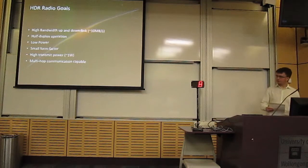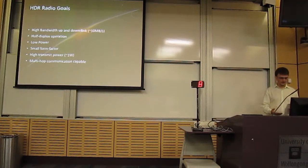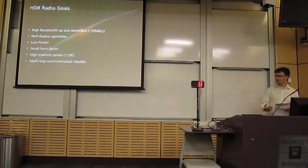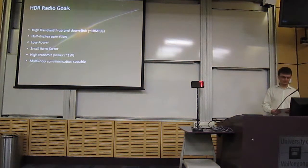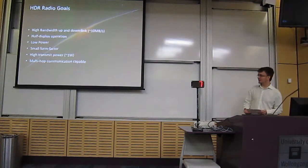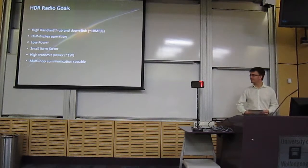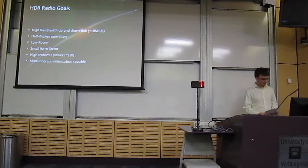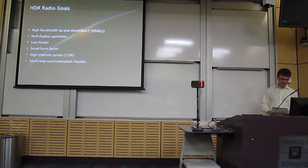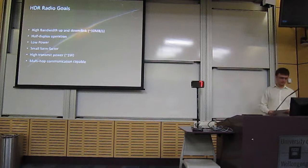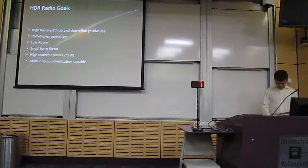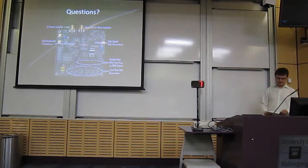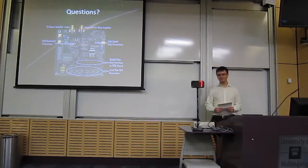The goals for the radio were high bandwidth down and uplink, not just the high bandwidth downlink that most satellites have now. It's also going to operate half duplex operation, and low power, because we're on a CubeSat, so solar power is all we have, and there's much limits when we only have 100mm size. It's got to be small to fit in the satellite, and high transmit power at one watt. And that's all we have for the radio so far.